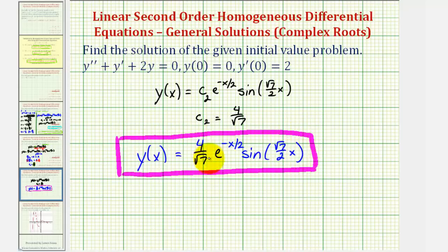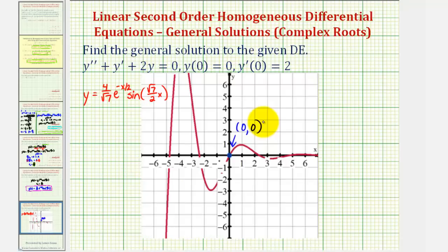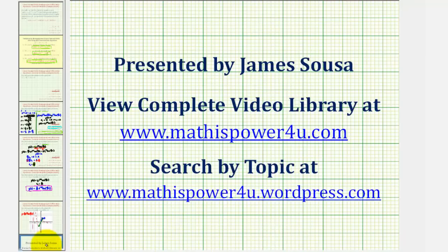To finish, let's graph this function. Since y of zero equals zero, this function should pass through the origin — and notice how our red function does pass through the origin. Also, since y prime of zero equals two, if we sketch the tangent line at x equals zero, the slope of the tangent line does look like positive two. I hope you found this explanation helpful.